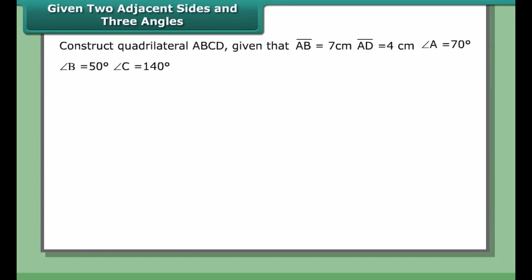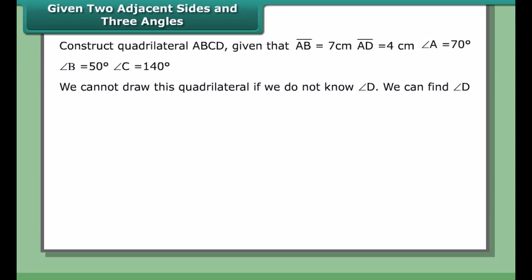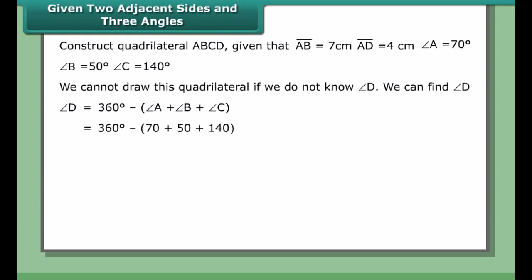Given two adjacent sides and three angles, construct quadrilateral ABCD given that AB = 7 cm, AD = 4 cm, angle A = 70°, angle B = 50°, and angle C = 140°. We cannot draw this quadrilateral if we do not know angle D. We can find angle D: angle D = 360° − (angle A + angle B + angle C) = 360° − (70° + 50° + 140°) = 100°.